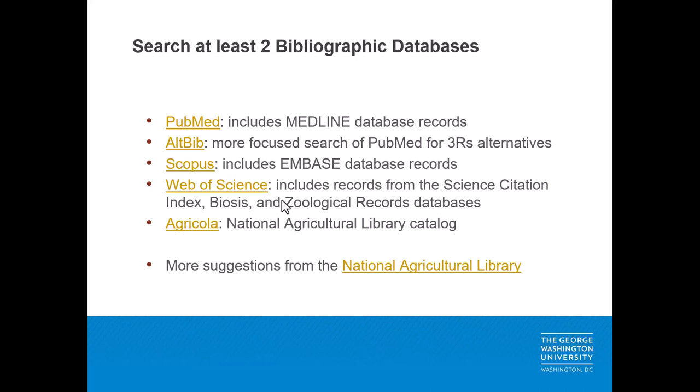Bibliographic databases available to GW researchers for 3Rs alternatives searches include PubMed, which includes Medline database records; Altbib, which provides a more focused search of PubMed for 3Rs alternatives; Scopus, which includes the Embase Pharmacology database records; Web of Science, which includes records from the Science Citation Index, Biosis, and the Zoological Records databases; and Agricola, which is the National Agricultural Library catalog. 3Rs alternatives research can also be searched within individual journals such as Altex and Translational Science titles.